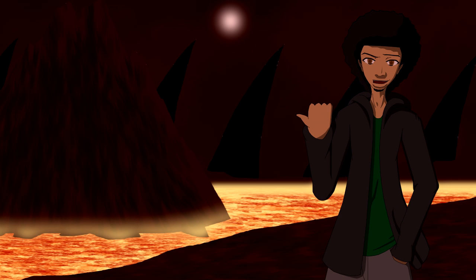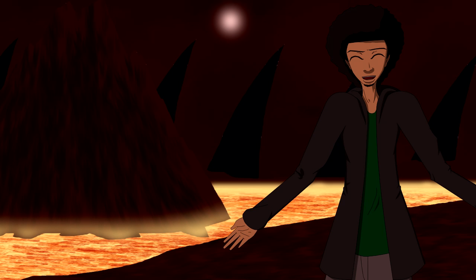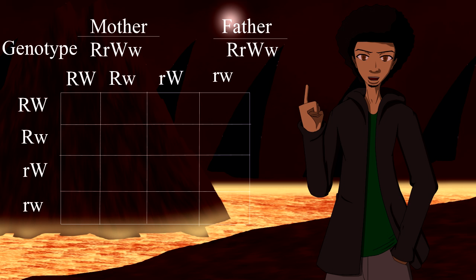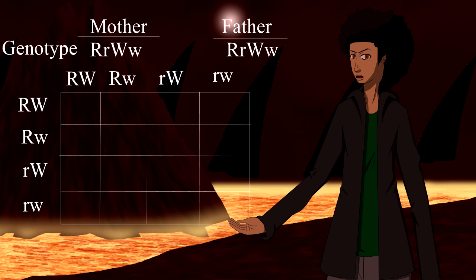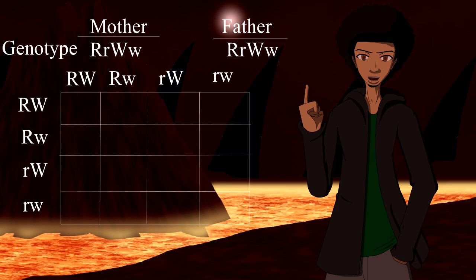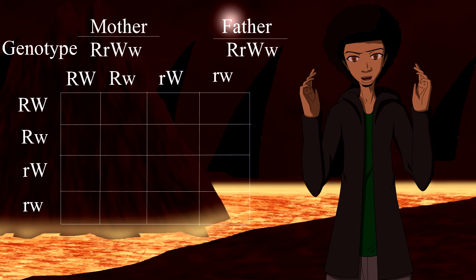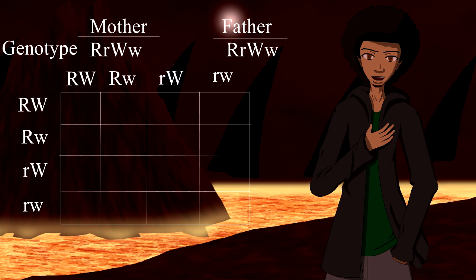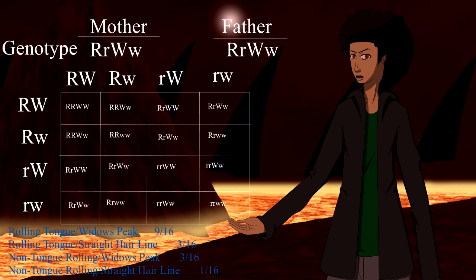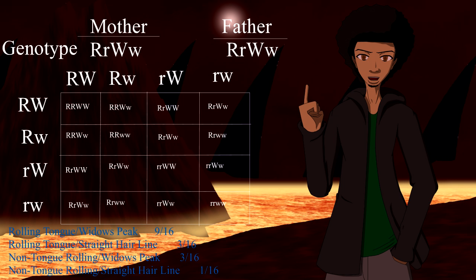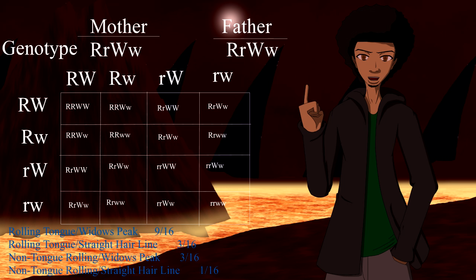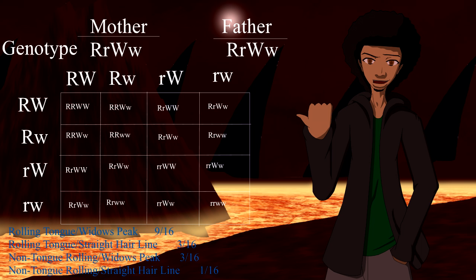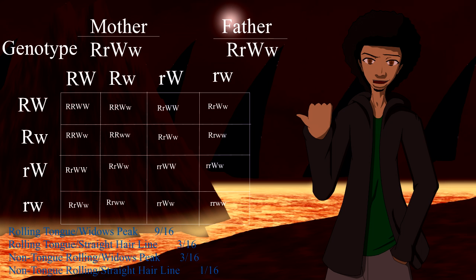A dihybrid cross is more complex — this is when two traits are being considered, so expect a bigger Punnett square. Let's say rolling your tongue is dominant to not being able to roll your tongue, and a widow's peak is dominant to a straight hairline. Rolling your tongue will be represented by R and the widow's peak by W. The mother and father are heterozygous for both traits: Big R Little R and Big W Little W. The child has a 9/16 chance of rolling their tongue and having a widow's peak, a 3/16 chance of rolling their tongue with a straight hairline, a 3/16 chance of not rolling their tongue with a widow's peak, and a 1/16 chance of not rolling their tongue with a straight hairline.